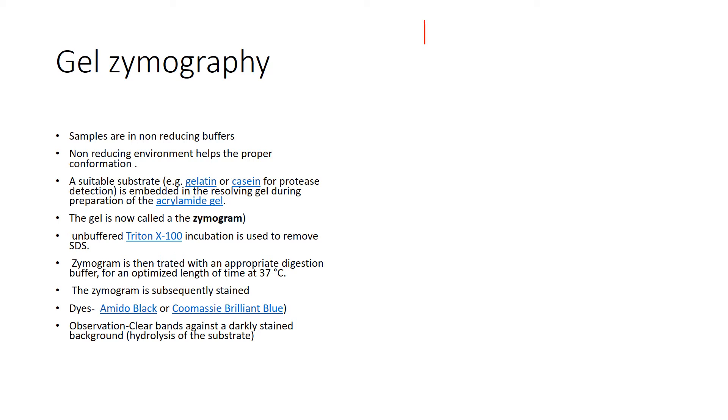The first important modification when PAGE is used in gel zymography is the use of non-reducing buffers. Non-reducing buffers are used for a particular intention: the enzyme which we want to detect should be present in its native form, remaining active. The environment is kept non-reducing in nature.